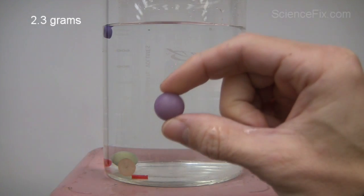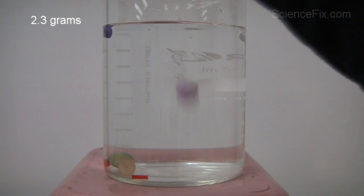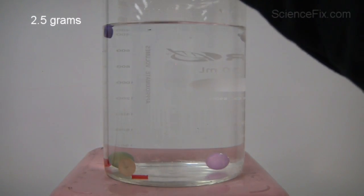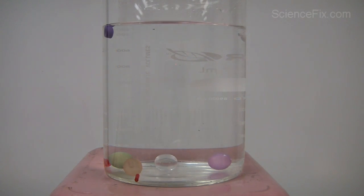Next is the purple marble with a mass of 2.3 grams. We kind of went out of order here, but it sinks. The clear marble has a mass of 2.5 grams, and it sinks as well.